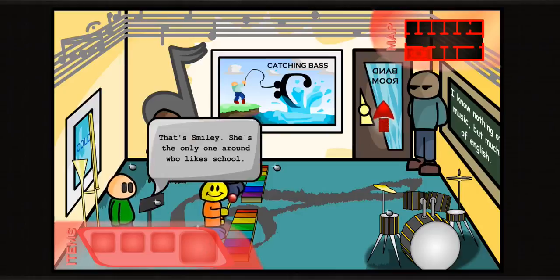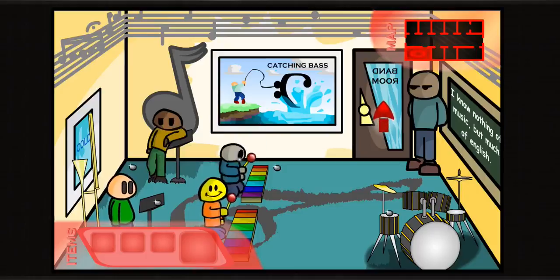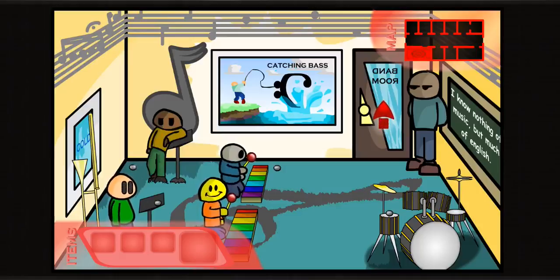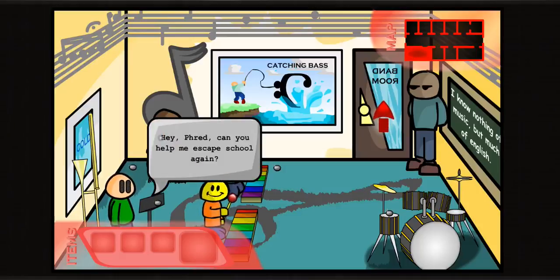This is Smiley. She's the only one around who likes school. She probably does. She's smiling. I have one of those in my class too. That's Zach, who is always very, very cold. I wonder why he never wears more than one sweater. Me too. If I was that cold, I'd probably wear three sweaters. What's Fred doing here? Hey Fred, can you help me escape school again?